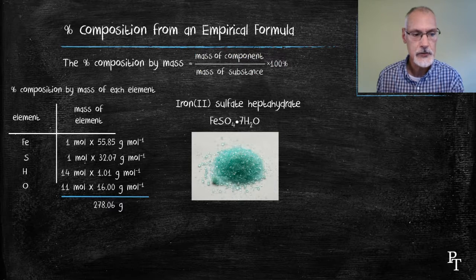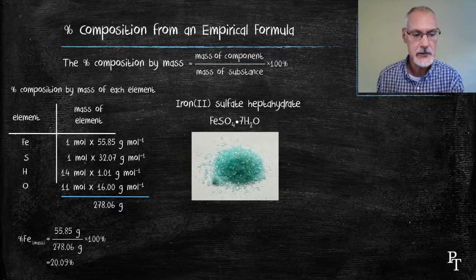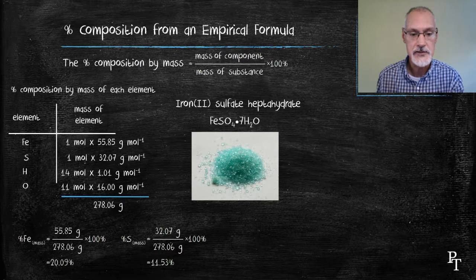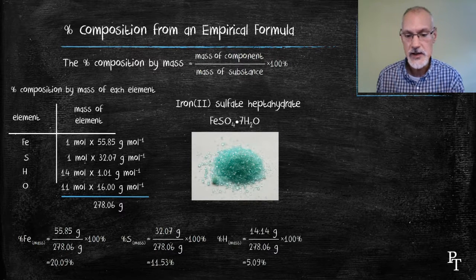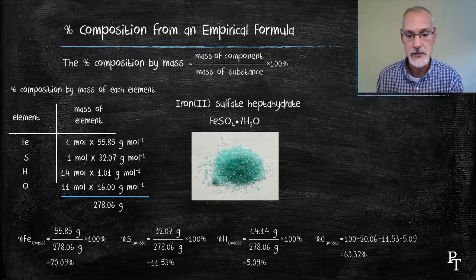Now to get the percent of iron, I put the mass of iron over the molar mass and I get about 20.09%. I do that similarly for each of the elements. Sulfur, then hydrogen, and lastly for oxygen. I could do it, but I could also just take 100% and subtract the various components from it and arrive at 63.32%.